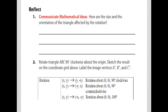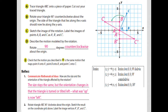From a reflection standpoint, you need to answer: how is the size and orientation of the triangle affected by the rotation? Think about what the definition said about size — was it affected? And was the orientation affected? Those are the two questions to answer. Then for number two, rotate triangle ABC 90 degrees clockwise about the origin, sketch the result, and label it A double prime, B double prime, C double prime.